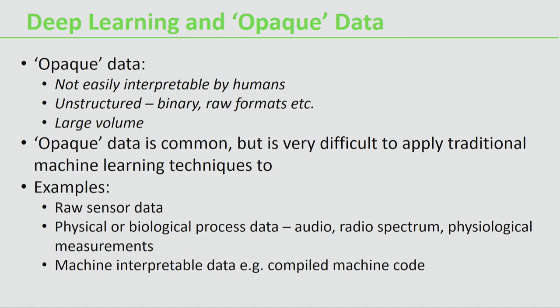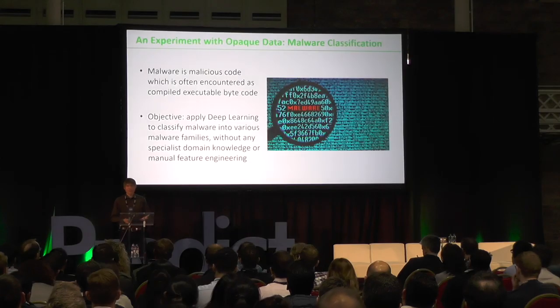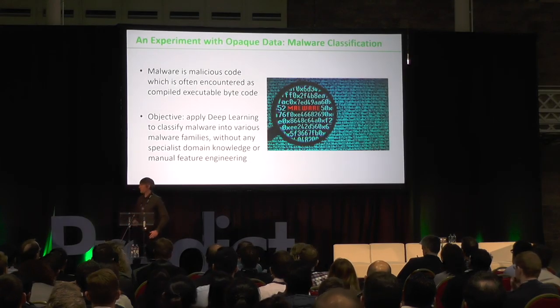There's also a lot of physical or biological process data — think of raw audio, radio spectrum data from telescopes or other measurements, physiological data from measurements of our own bodies, and machine-interpretable data such as compiled machine code. All of this data is very difficult for humans to understand, and therefore hard to apply traditional machine learning methods to. Deep learning gives us an advantage in that we can start applying these techniques to this kind of data a lot more. Now I'm going to introduce a colleague, Adita, who's going to talk.